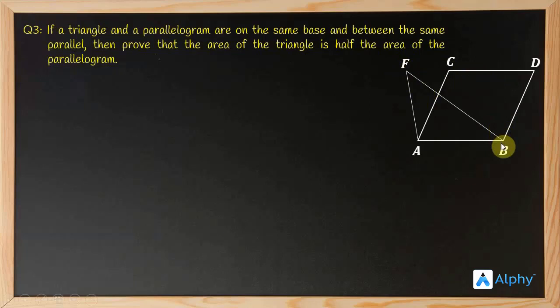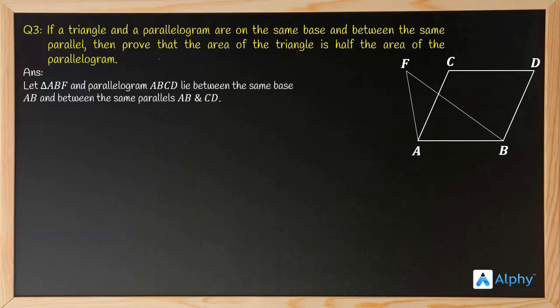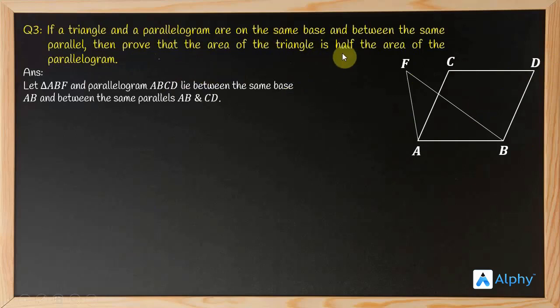Let triangle ABF and parallelogram ABCD lie between the same base AB and between the same parallels AB and CD. This is an introductory statement explaining the diagram we made, which is necessary because the diagram was not part of the original question — so we made it and we explain it.